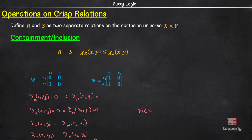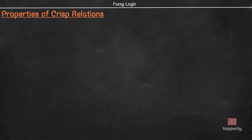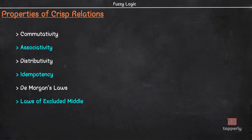Now, before jumping to composition, let's discuss which properties are satisfied by crisp relations. Just like for classical set operations, properties of commutativity, associativity, distributivity, and idempotency are satisfied for crisp relations. In addition to this, De Morgan's laws and laws of excluded middle also hold true for crisp relations.